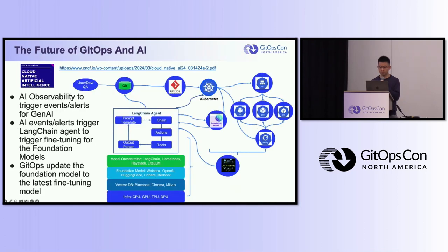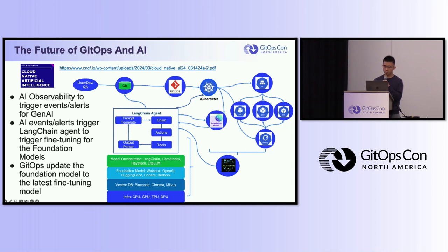The last thing I want to talk about is the future of GitOps and AI. The CNCF has just created a cloud-native AI workgroup — you can get more detail from the link provided. The cloud-native AI group wants to use a cloud-native way to manage foundation models, and we can also use GitOps to deploy foundation models by committing YAML files, with GitOps managing the whole lifecycle of the models. The observability platform will not only monitor the Kubernetes platform but will also monitor the whole AI platform, including the infrastructure layer, vector DB layer, foundation model layer, and model orchestration layer.